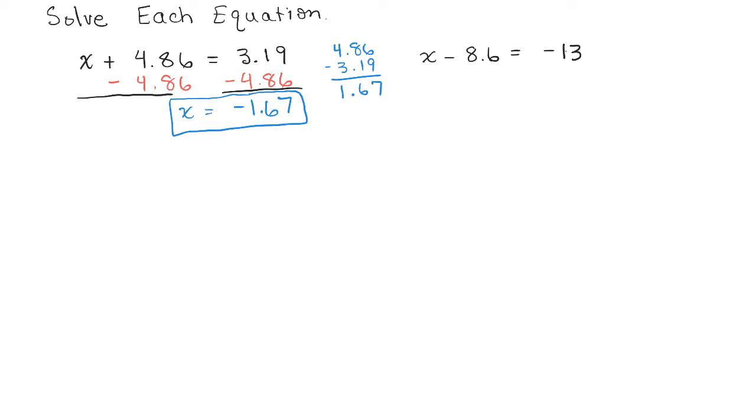All right, now let's make sure that's correct. So let's check it. So the original problem, X plus 4.86 equals 3.19, and this is how I like to check with this sort of t-bar. I'm going to plug in negative 1.67 for X and see if I get the same number on both sides if I simplify.